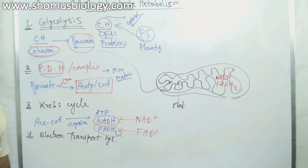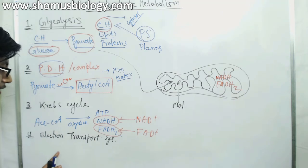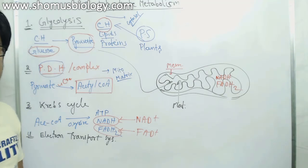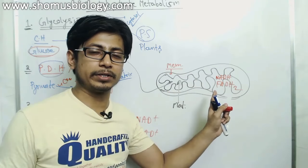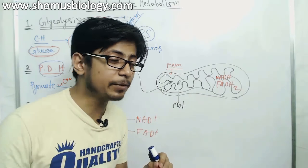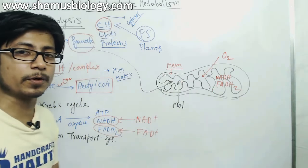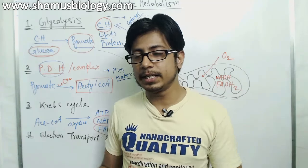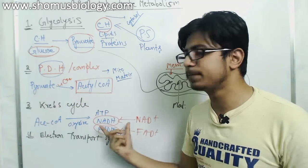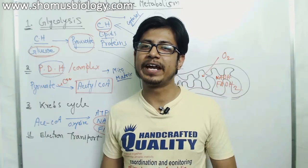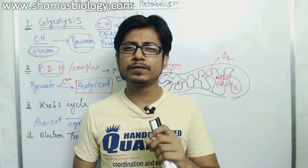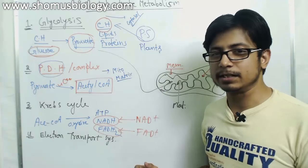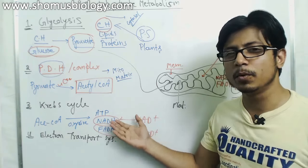The NADH and FADH2 produced by the Krebs cycle remain in the mitochondrial matrix, which is important since the electron transport chain occurs in the mitochondrial membrane and requires these molecules. Notably, the Krebs cycle does not generate any ATP — only two molecules of GTP are produced per cycle.